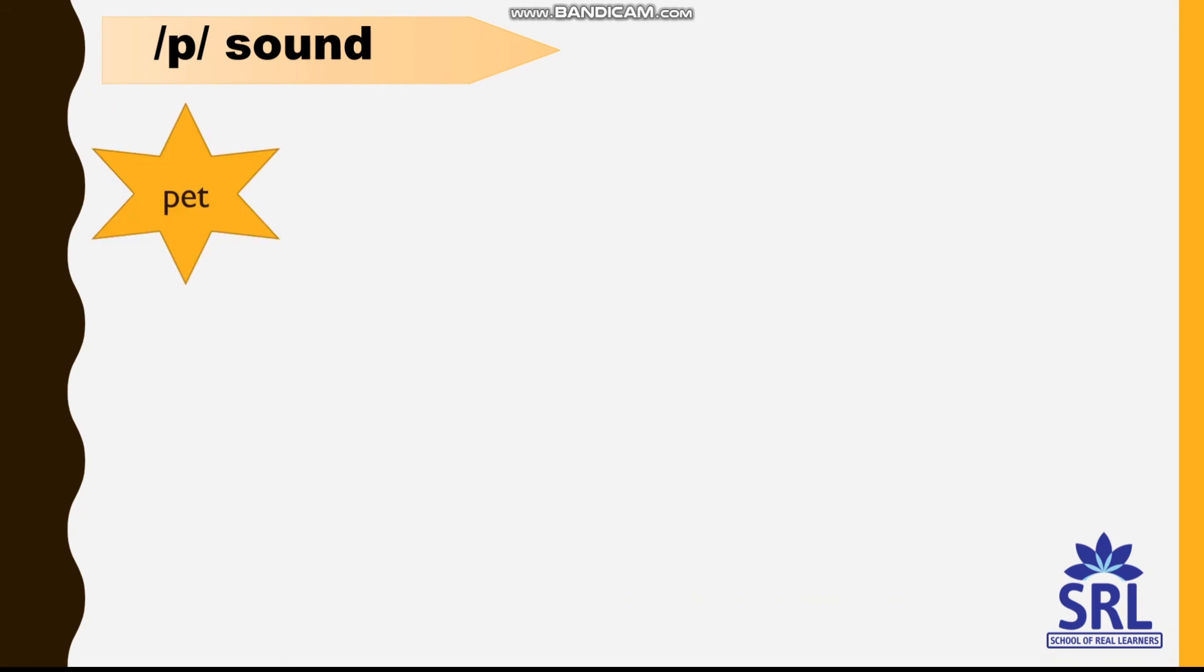Let's start with the letter P. P-E-T, pet. P-E-N, pen. P-I-T, pit. P-I-P-E, pipe. P-A-P-E-R, paper.